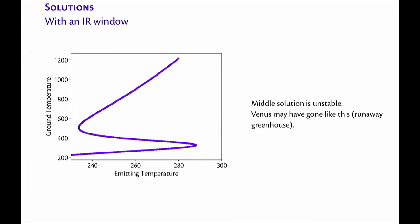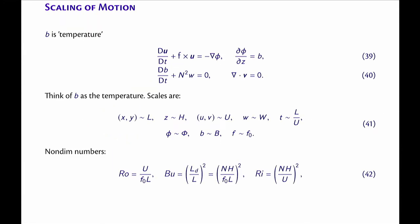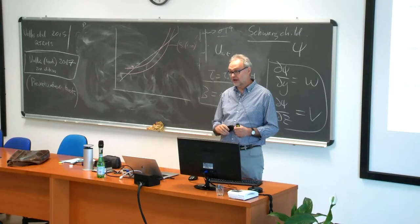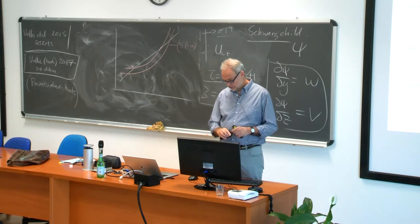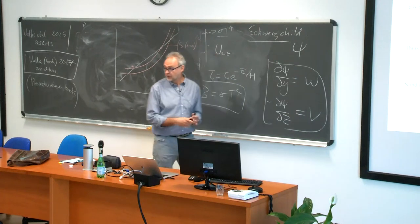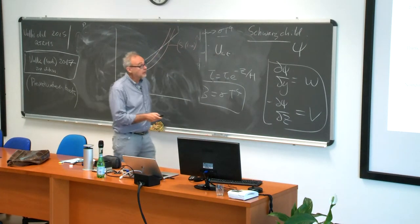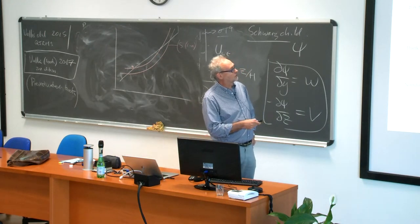Let's talk about scales of motion — back to dynamics. Scales of motion in the tropics and mid-latitudes, and one important concept called the weak temperature gradient approximation. The weak temperature gradient approximation says temperature gradients are weak in the tropics. That term was coined by Chris Bretherton, though the idea is actually due to Charney. In meteorology, all roads go back to Charney in a sense.